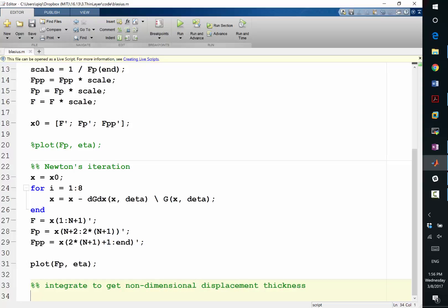So I have my fp, that is my streamwise velocity divided by, or it's already divided by ue. So I have just 1 minus that, is what we are trying to integrate.